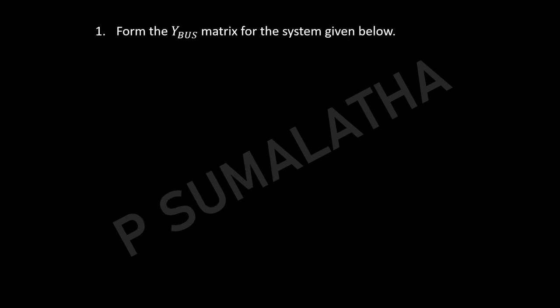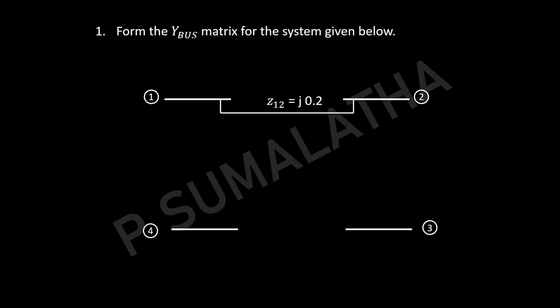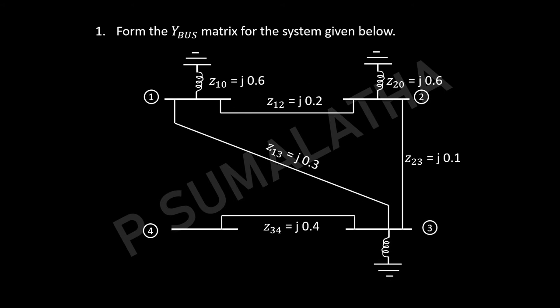Let us see one more example. Form the Y-bus matrix for the system given below. We have 4 buses. The impedance between buses 1 and 2 is J0.2 ohms, Z13 equals J0.3, Z23 equals J0.1, Z34 equals J0.4, Z10 equals J0.6, Z20 equals J0.6, Z30 equals J0.8. In this problem we have shunt admittance values also, but the procedure is the same — add all admittances to the bus for self admittance, take the negative for off-diagonal elements.